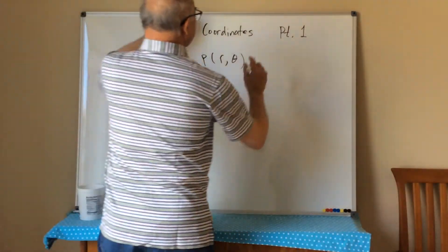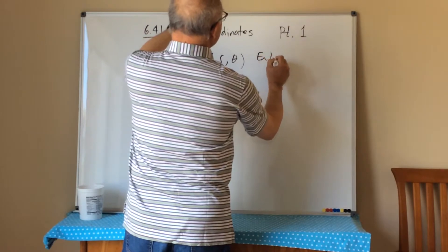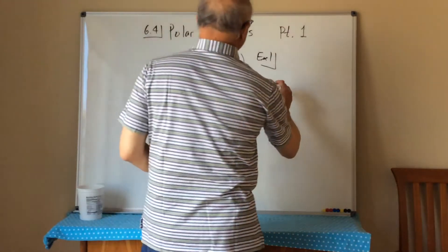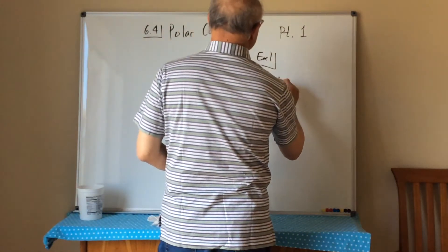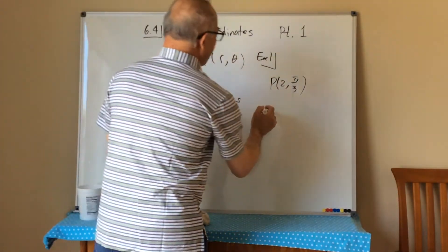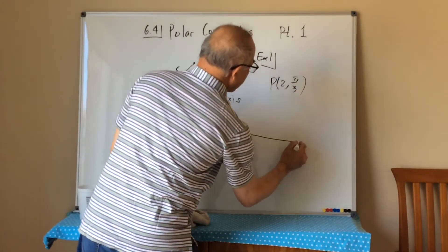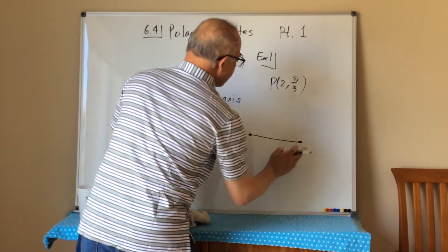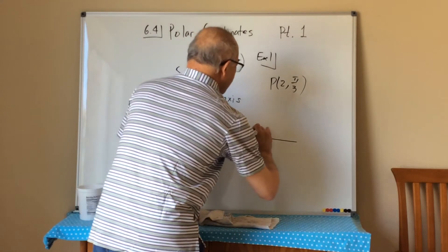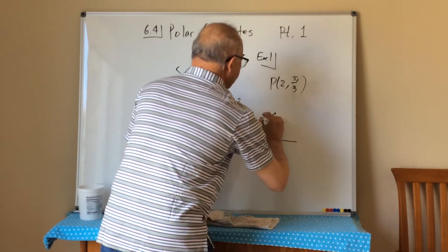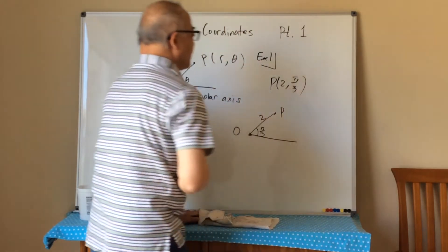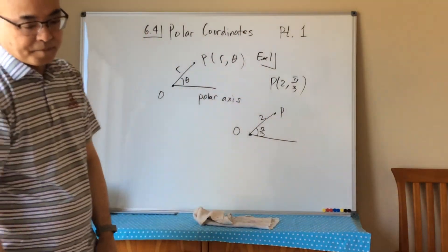Let's go to example number one. Part a: we have p equal to (2, pi/3). We go from the origin, rotate pi/3, and then go a directed distance of 2. This would be our point p. Pretty simple.